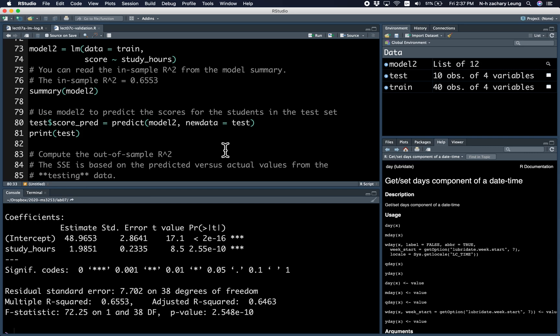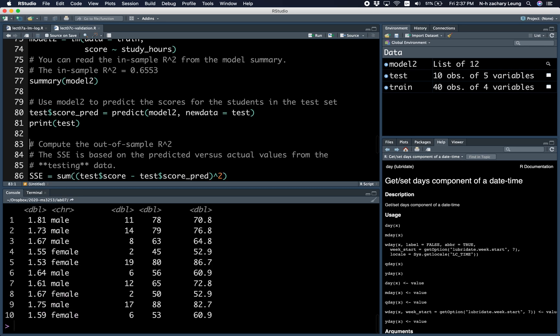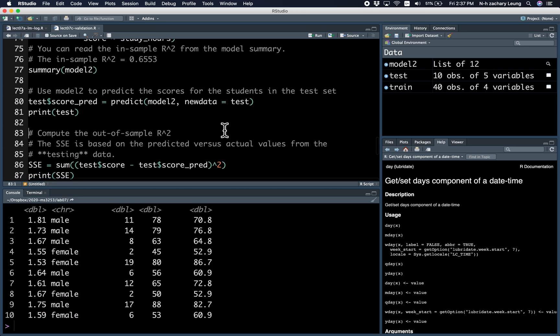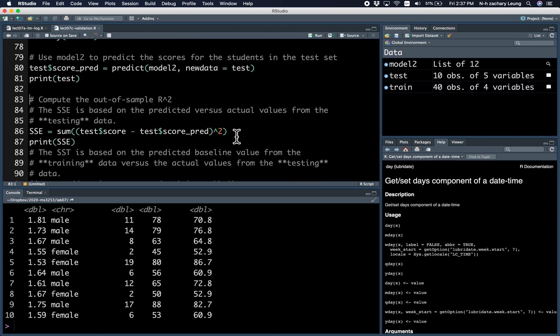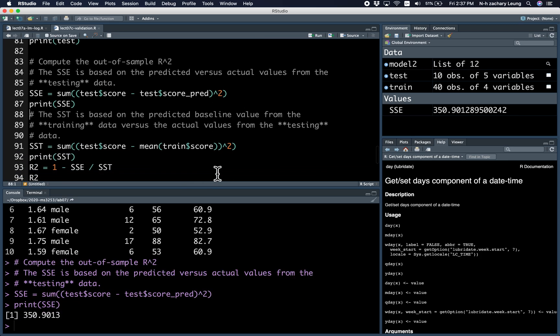Now, when you want to compute the out-of-sample R-squared, it's a bit more tricky. So first, you make the predictions, like so. And then you compare the sum of square errors. And then you compute the total sum of squares. The total sum of squares is based on the baseline value from the training set, but the actual value is from the testing set, okay? So that part is a little bit tricky.